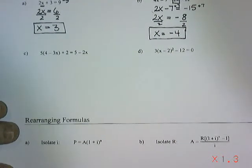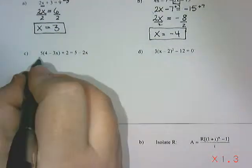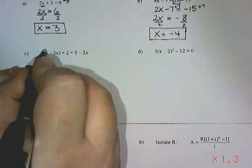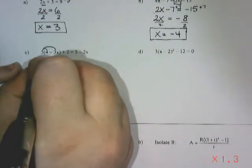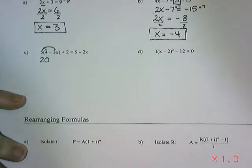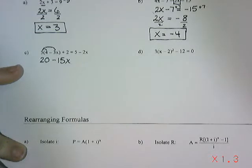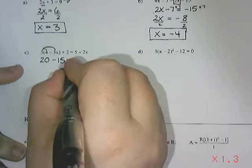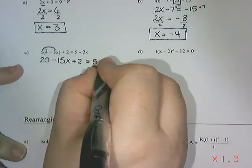All right, the next one has brackets. So when you have brackets, what you want to do is you want to multiply them out first, and then deal with the question from there. So I would start this question by multiplying the 5 into the bracket. So 5 times 4 is 20. 5 times negative 3x is negative 15x. And then there's still a plus 2. And on the other side, we have 5 minus 2x.